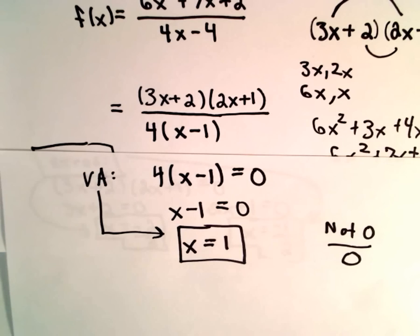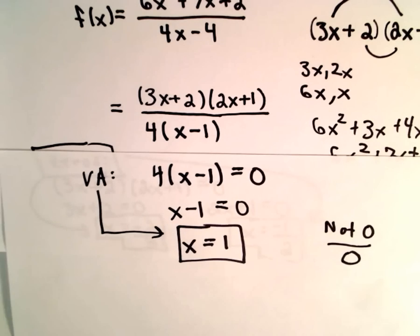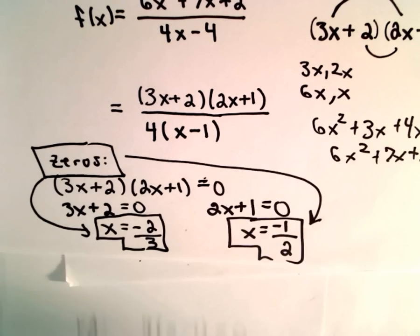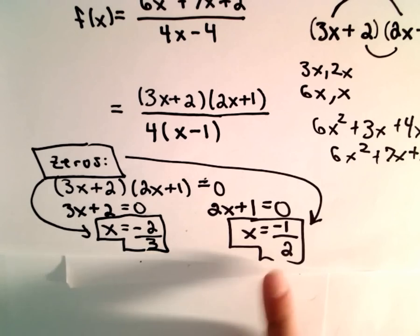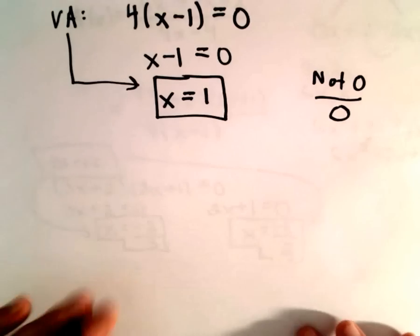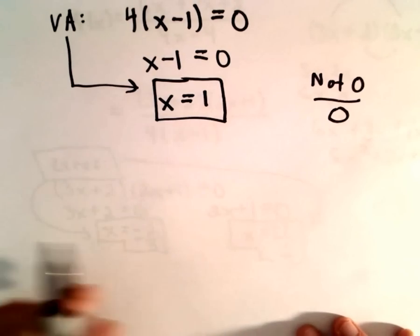I don't even have to do the arithmetic since there's no common factors. So in this case, we found zeros at -2/3 and -1/2, and our vertical asymptote was at x = 1.